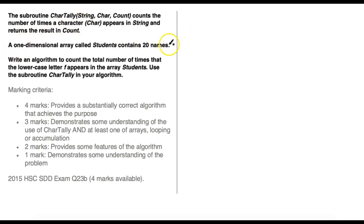A one-dimensional array called students contains 20 names. Write an algorithm to count the total number of times that the lowercase letter f appears in the array students. Use the subroutine char tally in your algorithm.